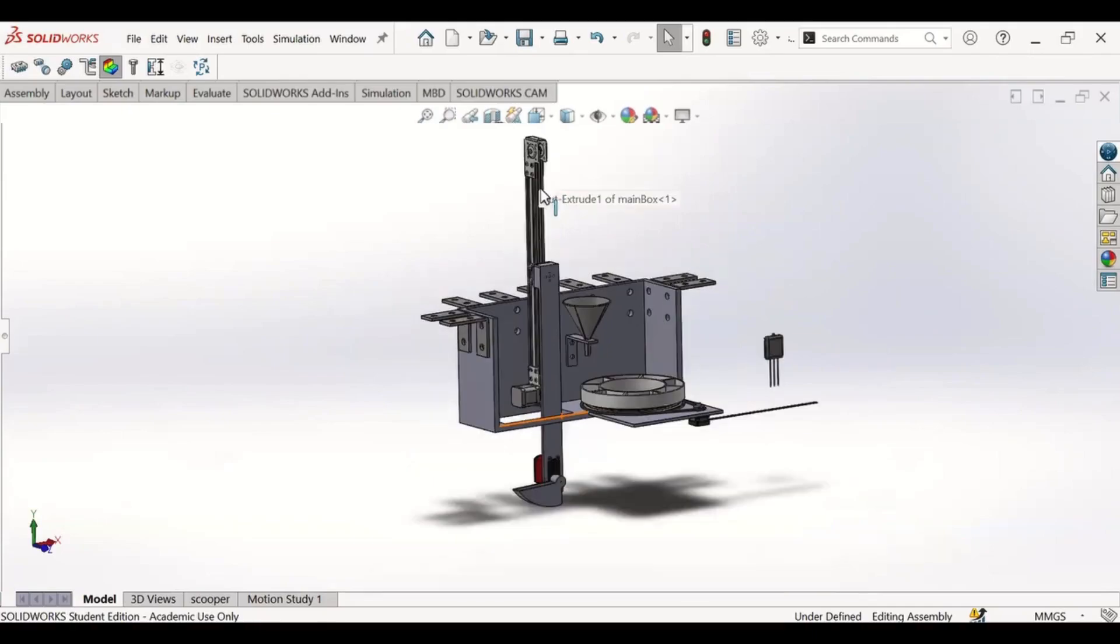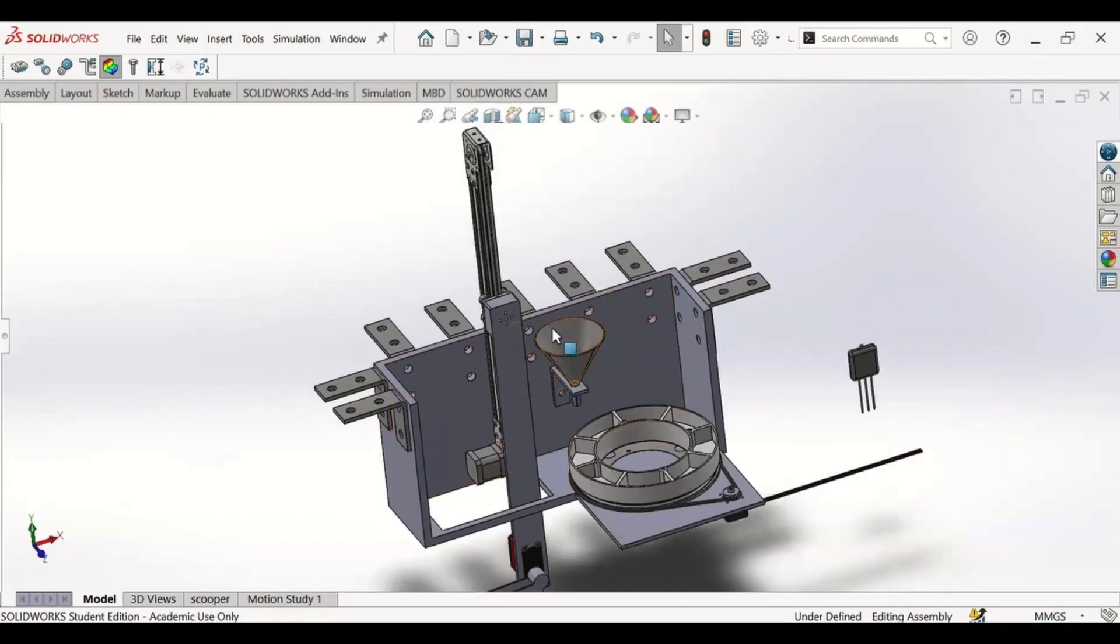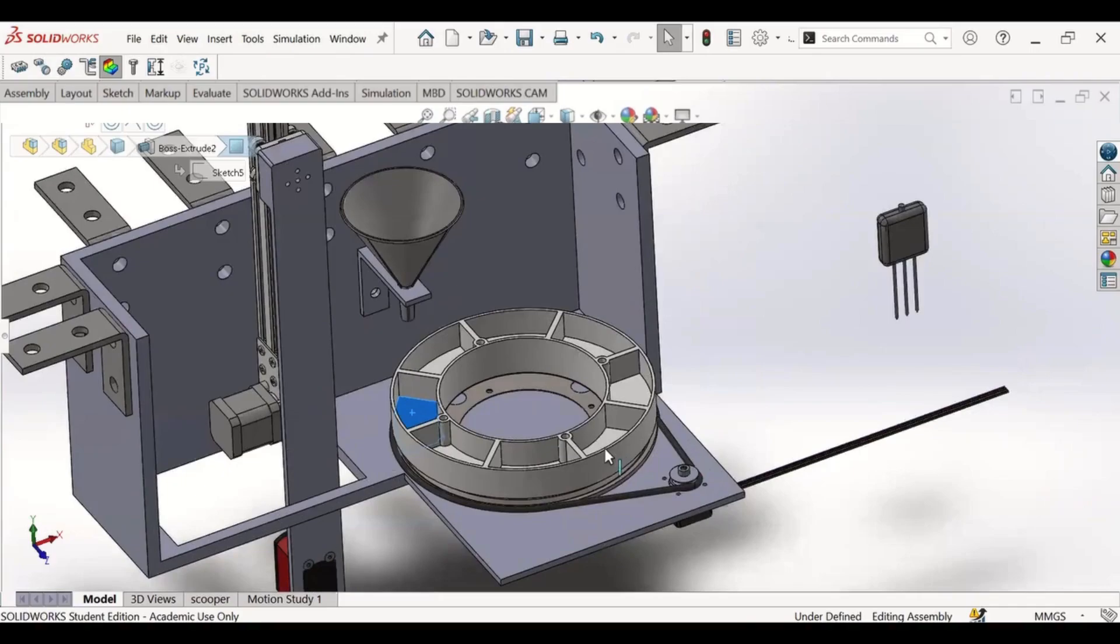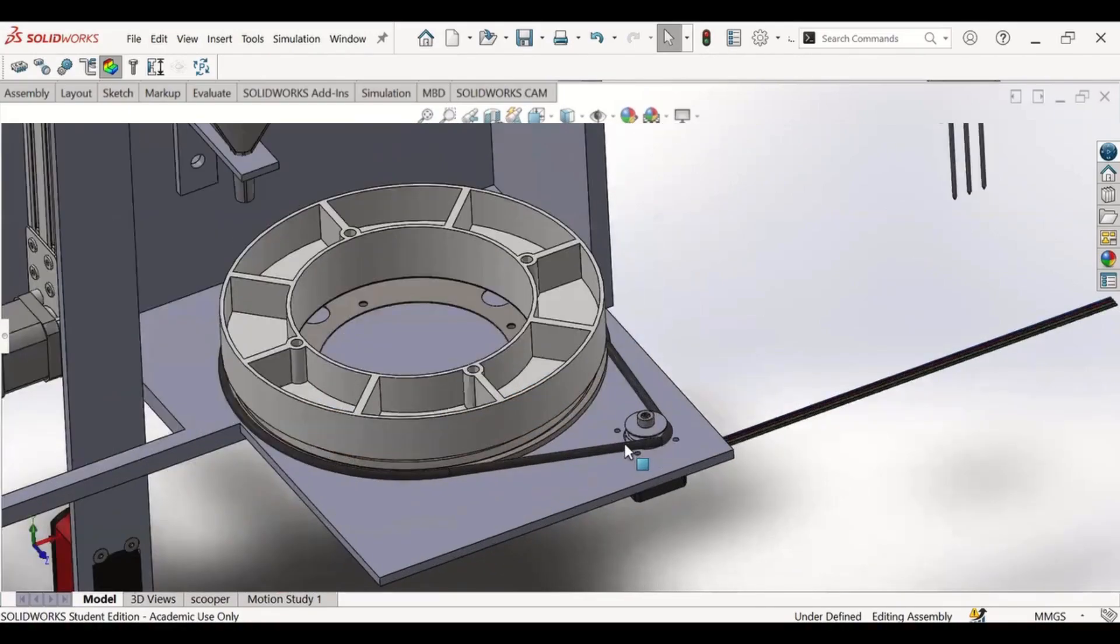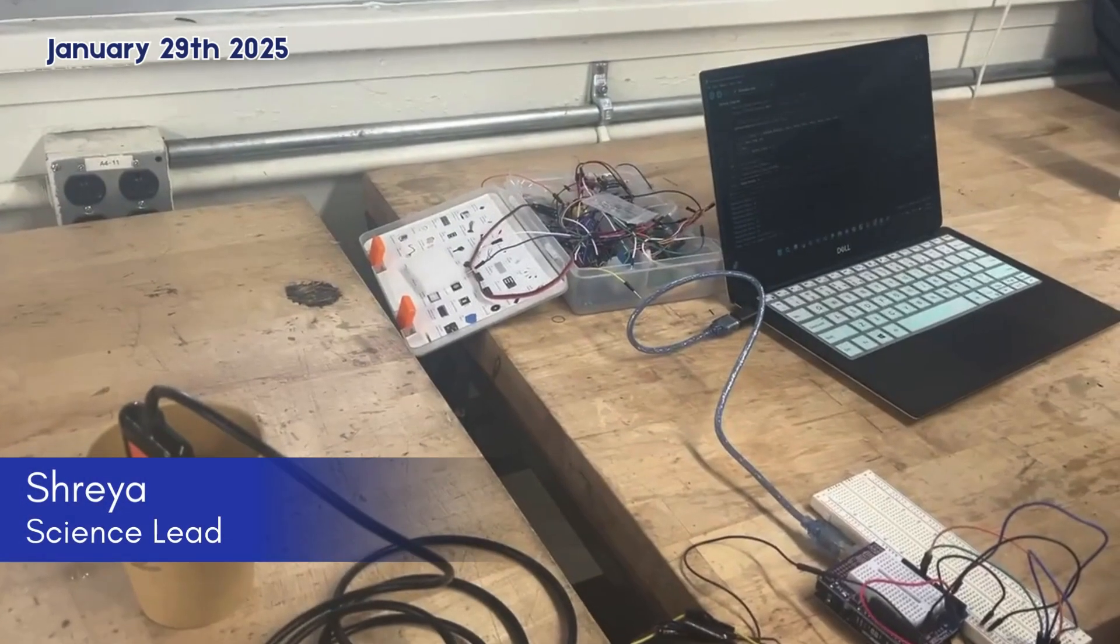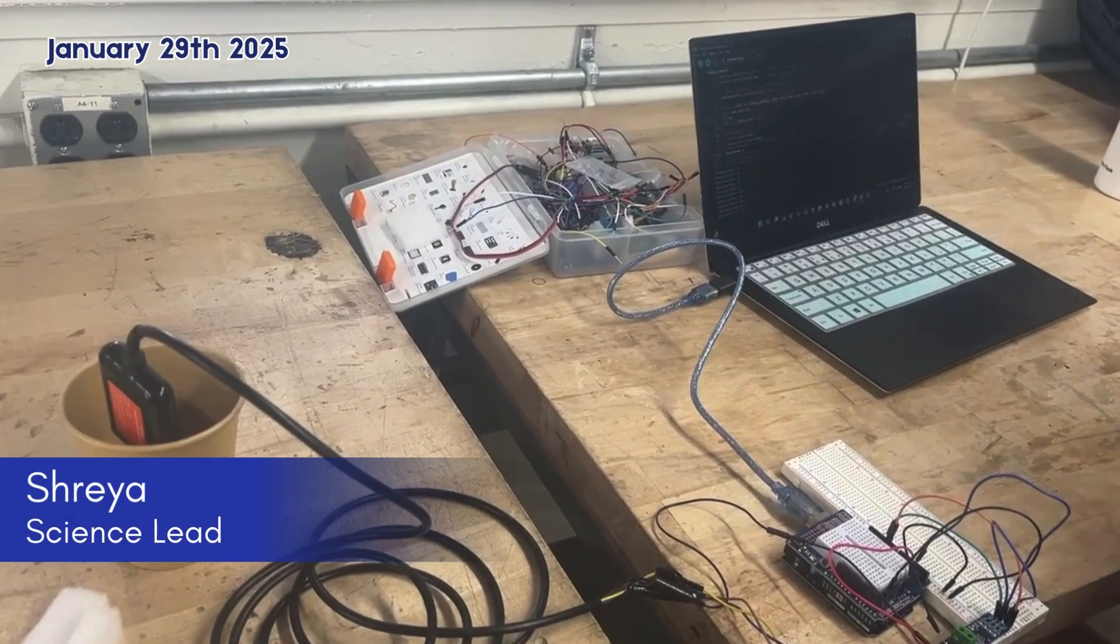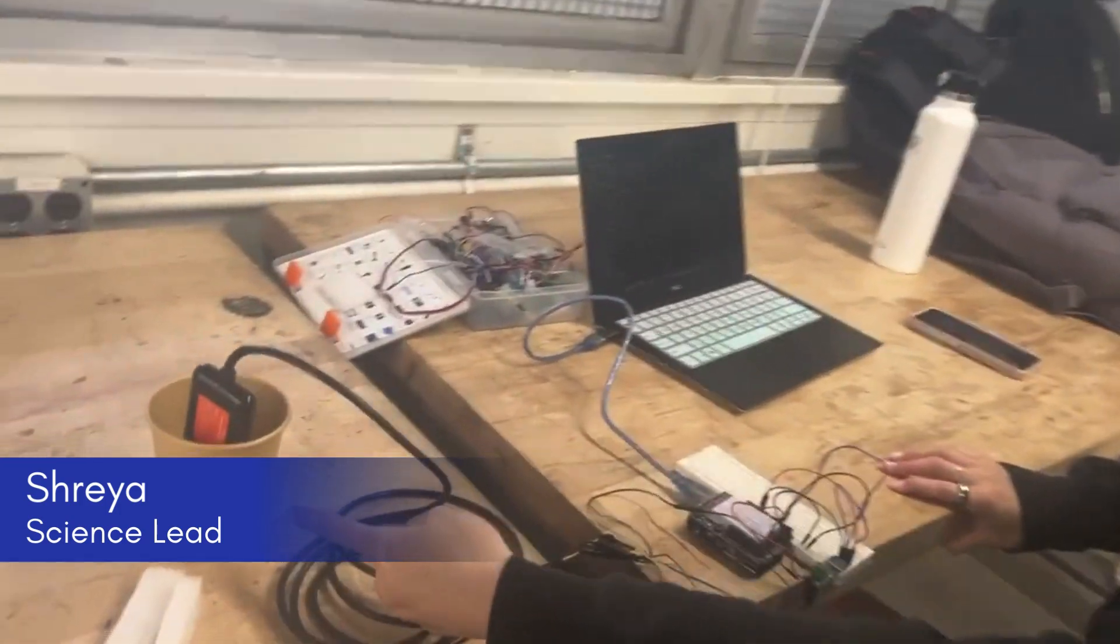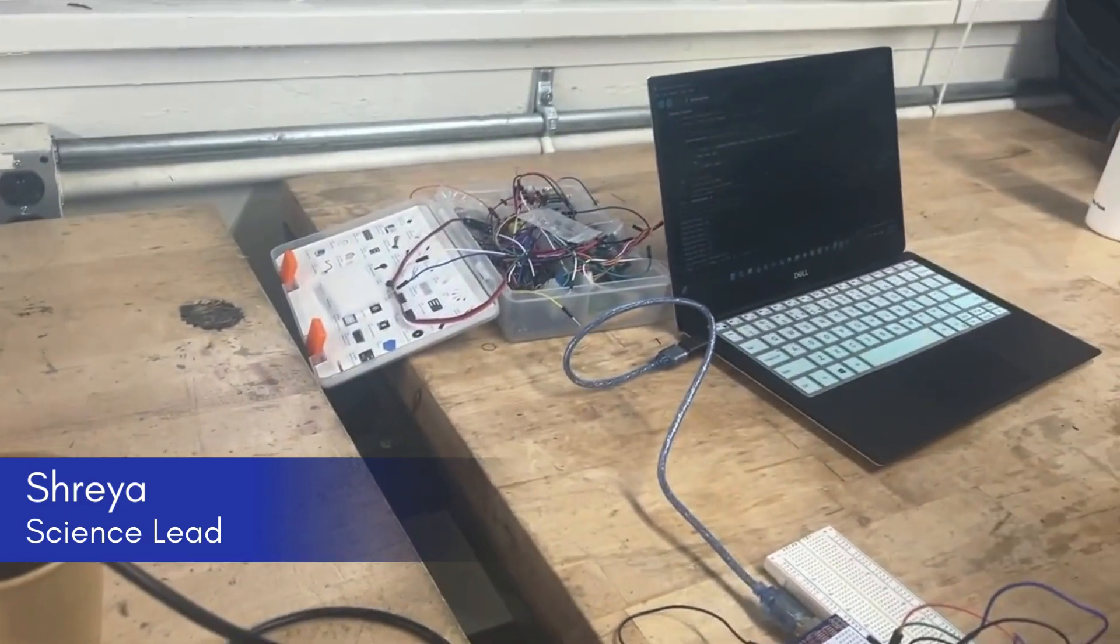This disc then rotates approximately 45 degrees using a conveyor belt system powered by a stepper motor. We will be using a four-in-one probe that detects humidity, temperature, pH level, and electrical conductivity in order to discern whether life could exist at these sites.